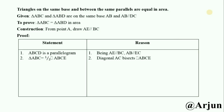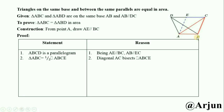Statement number 2: Triangle ABC is equal to half of parallelogram ABCE. The diagonal AC bisects the parallelogram into two equal parts, so triangle ABC is half of parallelogram ABEC. Reason: diagonal AC bisects the parallelogram ABCE.